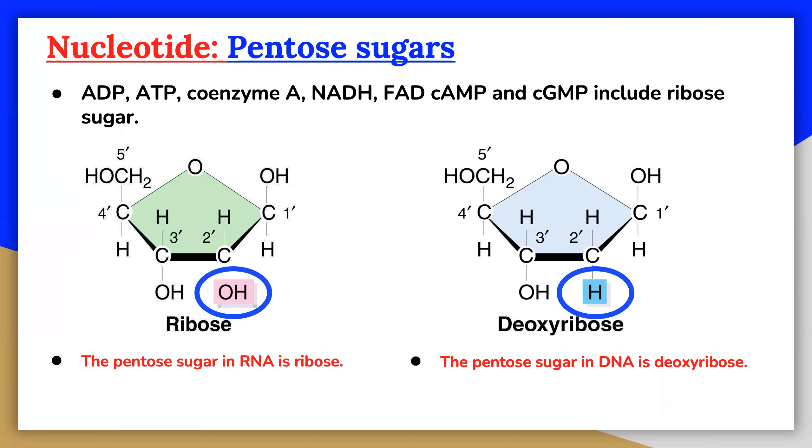Deoxyribose is obtained from the sugar ribose by the loss of an oxygen atom. The metabolically important species that include phosphorylated ribose include ADP, ATP, cyclic AMP, FAD, and NAD.